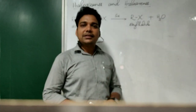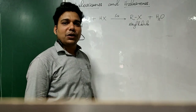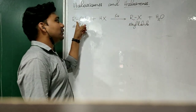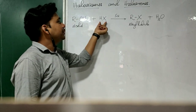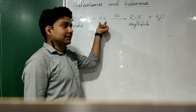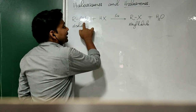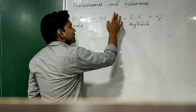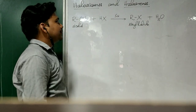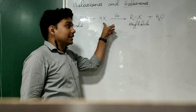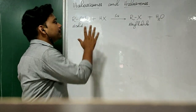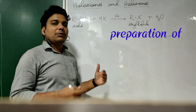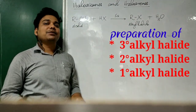Hello students. In the last class we were talking about the preparation of alkyl halides, where our starting material was alcohols. We were using halogen acids, and the reaction of alcohols with halogen acids was discussed to be nucleophilic substitution reactions where the halide ions were the nucleophiles. Today we will take examples for the preparation of tertiary, secondary, and primary alkyl halides.